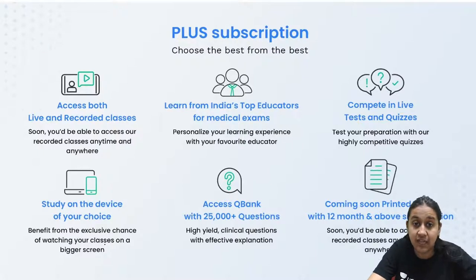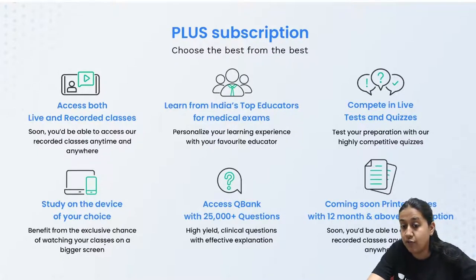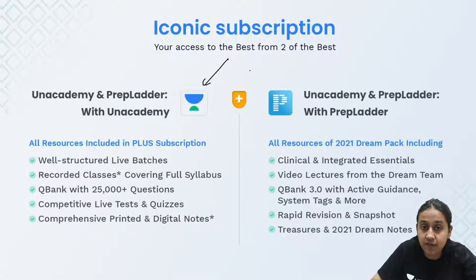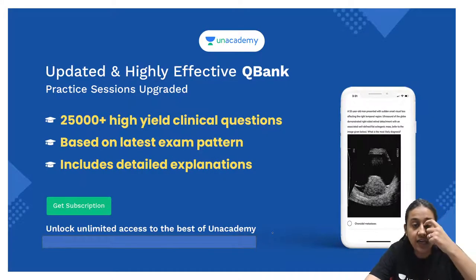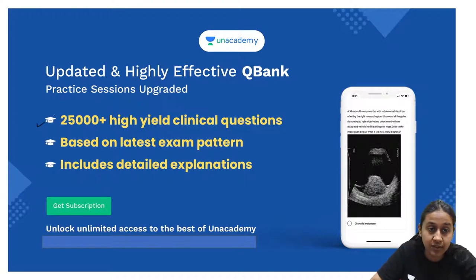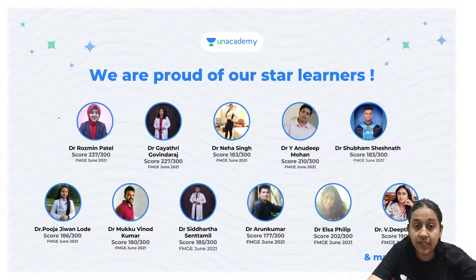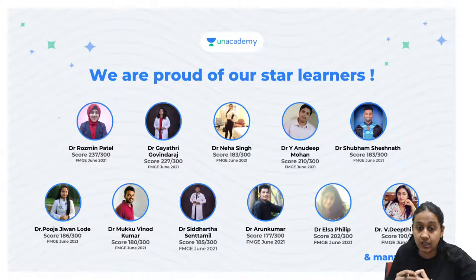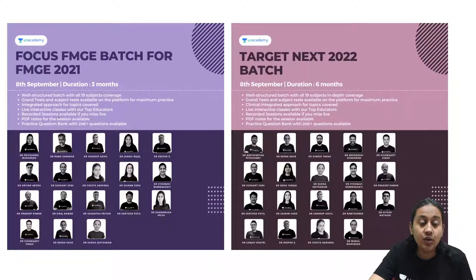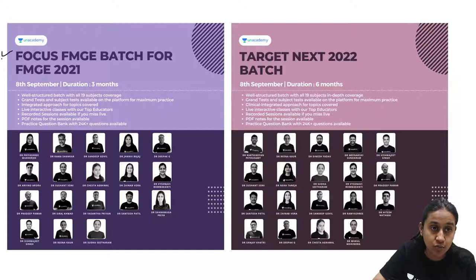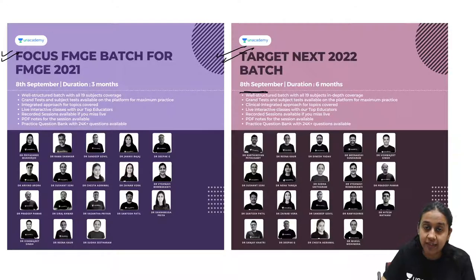We offer two types of paid subscriptions. The Plus subscription gives you access to Unacademy live classes from top educators, 25,000+ questions, and printed notes. The Iconic subscription gives you access to both Unacademy and PrepLadder together, which includes video lectures, question bank, rapid revision courses, and the Dream Notes. We also have new batches starting from the 8th — the Focus FMG batch and the Target NEET batch.